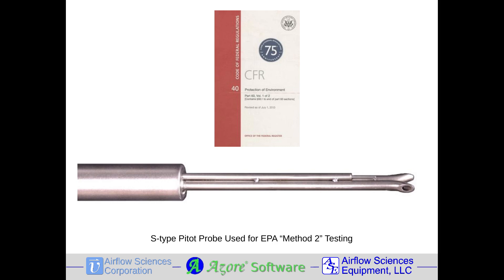Though there is a standard design for the S-type pitot probe, minor variations in manufacturing tolerances and wear over time can cause the probe measurements to vary. EPA Method 2 thus provides guidelines on how to perform regular calibration of a probe in the controlled environment of a wind tunnel. With the proper calibration, the most accurate flow measurements are obtained in the gas streams of ducts and smokestacks at industrial sites.